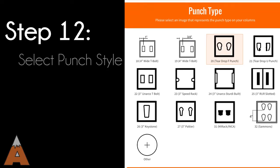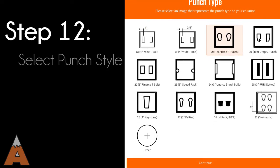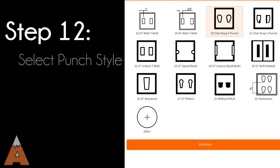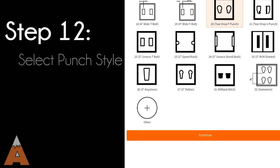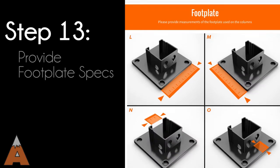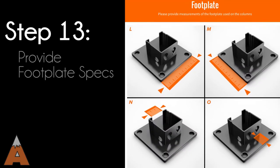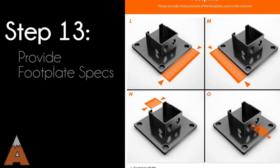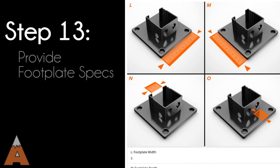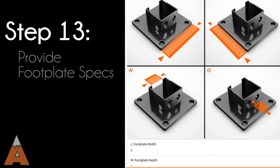Using the column punch style chart, select the type that matches the damaged upright. Your final measurements are of the footplate. Using the diagram on the app, provide the needed footplate measurements.